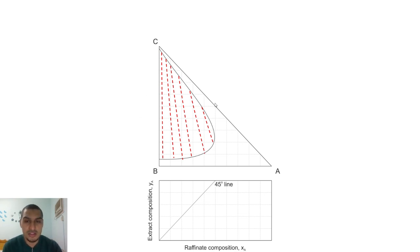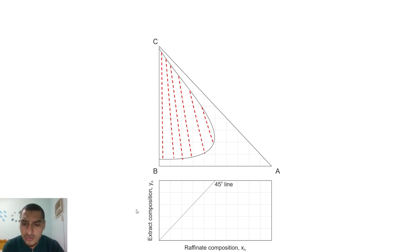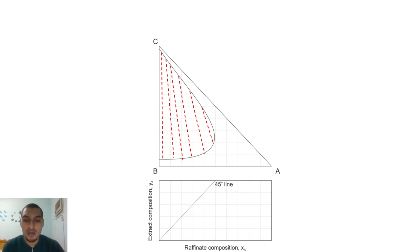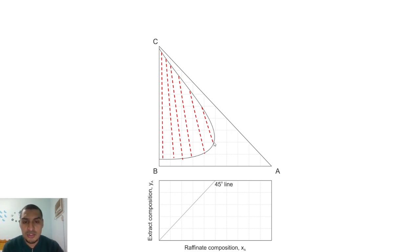The only trick we need to know is how to express the tie lines as equilibrium points on the XY diagram and how to put the operating lines on the XY diagram. The Y axis is the mole fraction or mass fraction of the solute in the extract, and the X axis is the mole fraction or mass fraction of the solute in the raffinate, which is the stream we want to purify. Each point on the XY diagram has two coordinates: an X coordinate and a Y coordinate.